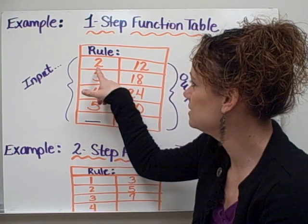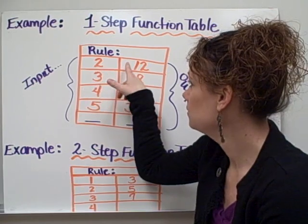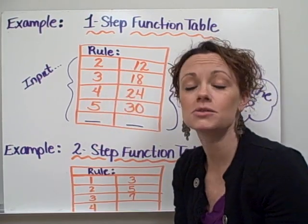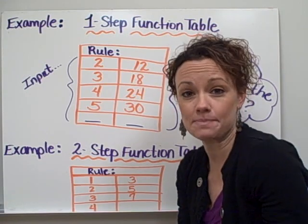So let's take a look at our first example. Our first number of input is the number two. We put it into our function machine and it comes out looking like a number twelve. So we have to ask ourselves what is done to two to make it become twelve.